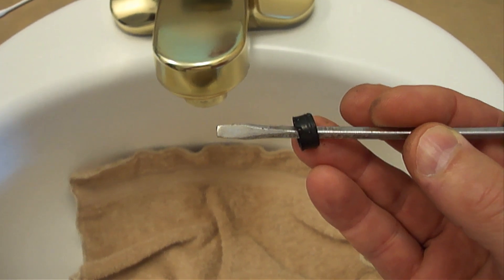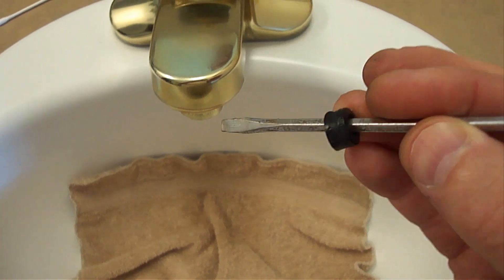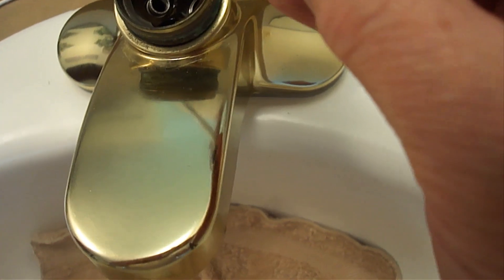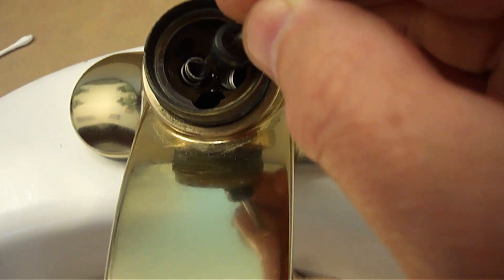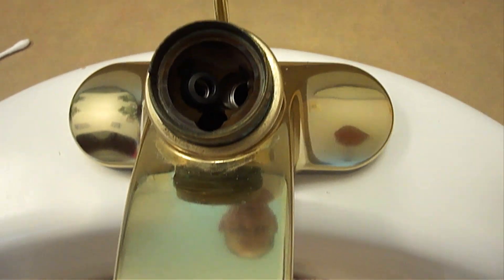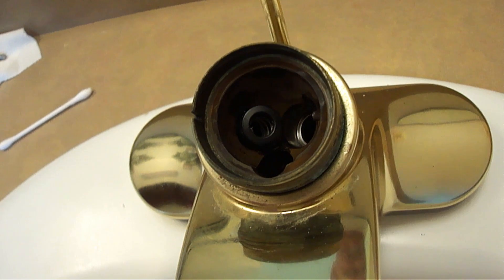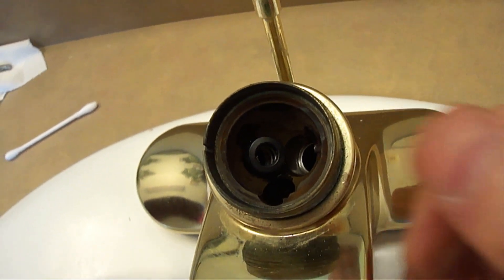The other thing I like to do is first wet the washer and then slide it onto a little screwdriver and then guide it into place. Next, gently seat the washer by pushing it in with your finger.